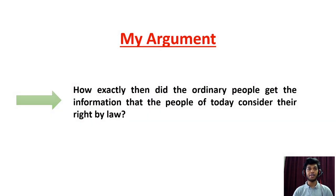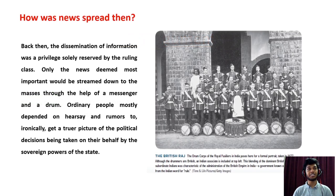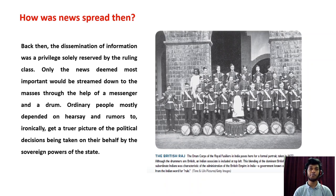So the question is: how exactly did ordinary people get information that people today consider their right by law? First, we need to understand how news was spread back then. The dissemination of information was a privilege solely reserved by the ruling class. Only news deemed most important would be streamed down to the masses through the help of a messenger and a drum. Ordinary people mostly depended on hearsay and rumors to ironically get a truer picture of the political decisions being taken on their behalf.